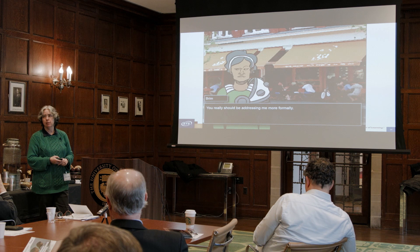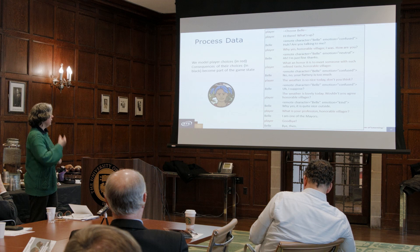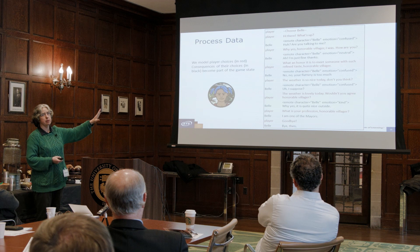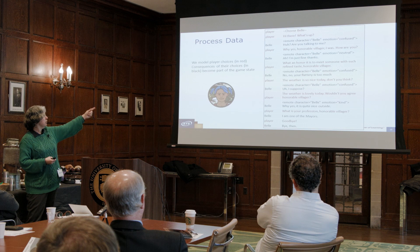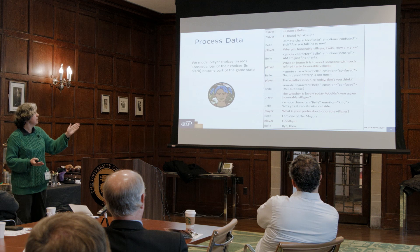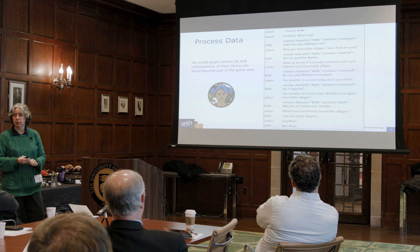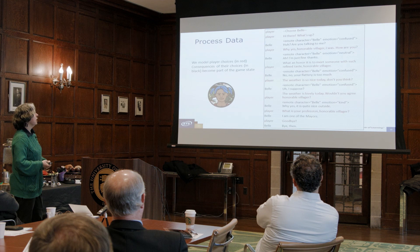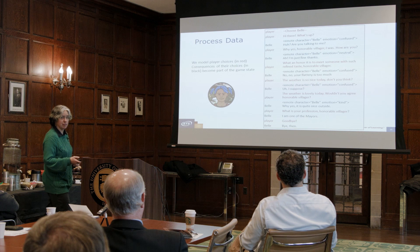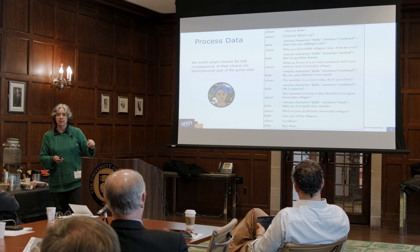Here is the sort of process data we get out — the complete record. This was done with adults. In this example, a person chose one of the younger characters. They say 'hi there, what's up?' and Bell looks confused and says 'huh, you talking to me?' The player immediately switches to 'why, yes, honorable villager, I was — how are you?' showing the adaptability we're looking for. Bell responds positively. Even when they're right, they get feedback. The player continues in a formal way: 'what an honor it is to meet someone with such refined tastes.' I would like to be able to take this process data record and give an idea of their cross-cultural competency.